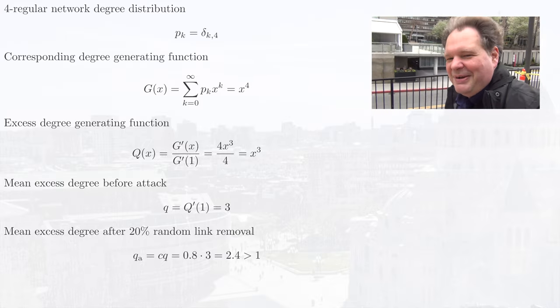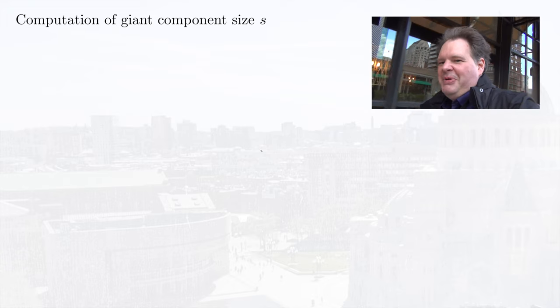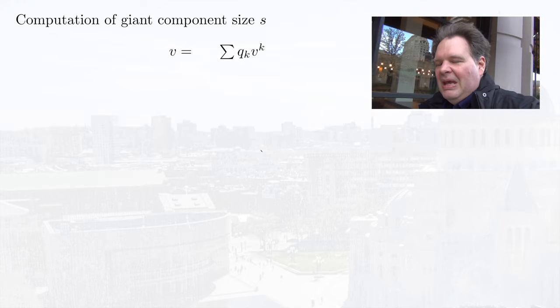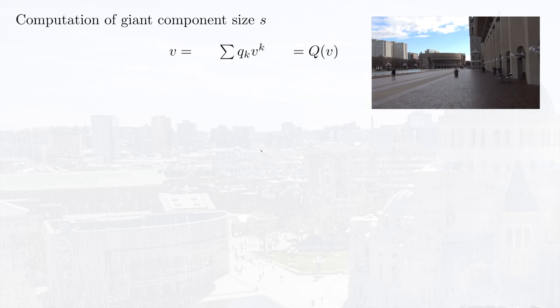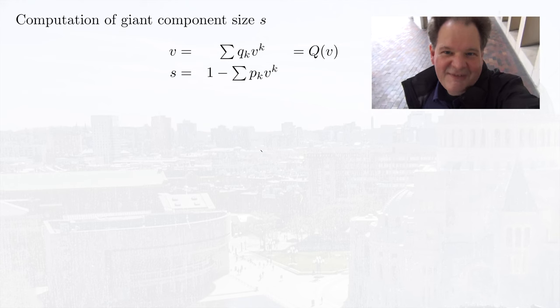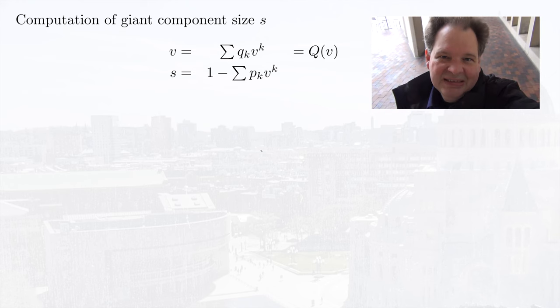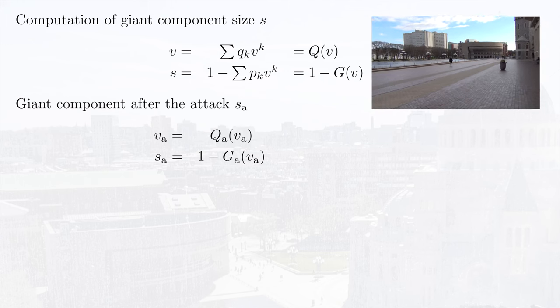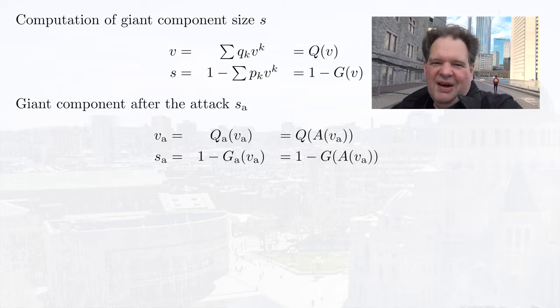So our mean excess degree is three right from the start. If we remove 20% of the roads, that leaves us with 0.8 times 3, which is still much more than one — there's still a giant component in this network. Of course, that there is a giant component doesn't mean my house is still in it. To compute the giant component size, we must first compute the probability v that following a random link doesn't lead to the giant component, from the equation v equals Q(v). Then we get the giant component size as 1 minus G(v). By removing 20% of the links, we disconnect less than 1% of the intersections.